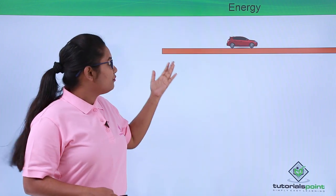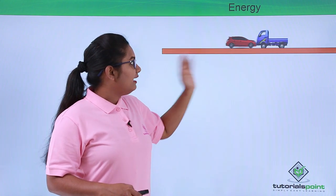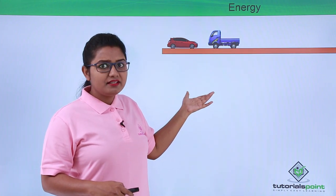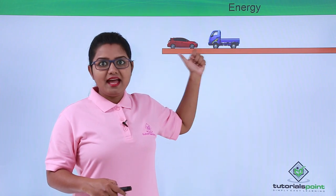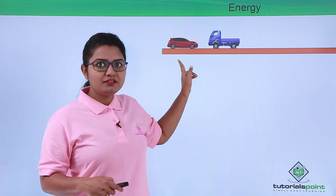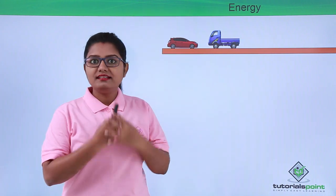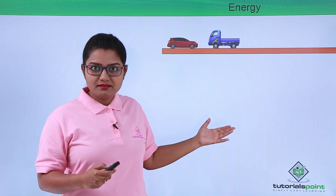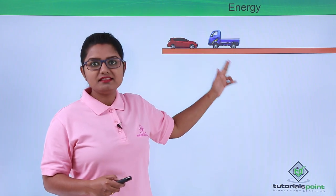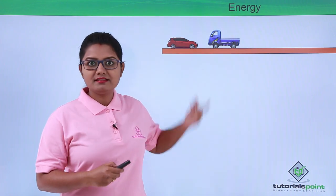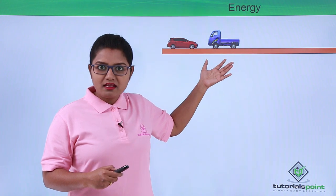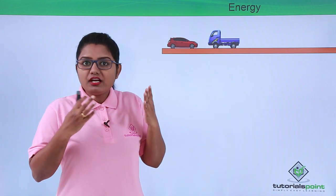Now let's discuss more about energy. Consider a situation where a moving truck hits a stationary car, and the car gets displaced to a certain distance. The truck was moving with a certain velocity, hit the stationary car, and as a result the car got displaced from its position to a new position. The moving truck has performed some work — that is, displacing the car from its place to a new place.